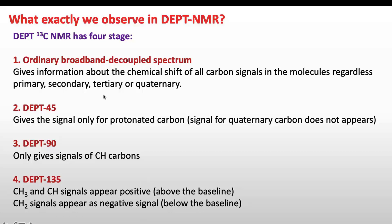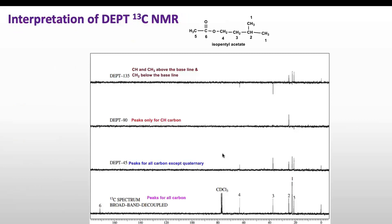Based on these four stages, we can find which signal comes from CH₃, which signal comes from quaternary carbon, which signal comes from CH₂, and which signal comes from CH in our spectrum. Let's take the example of isopentyl acetate, which has six types of carbon.